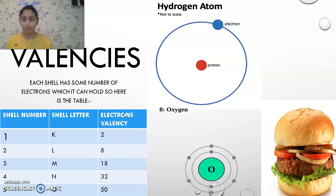Valencies - what are valencies? Each shell has some number of electrons which it can hold. That's just like the number of burgers you can eat in one day. Like, in one day you can eat two burgers, and in two days you can eat four, and so on. In the same way, there are valencies.